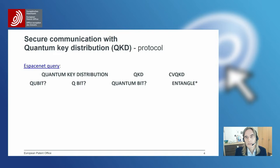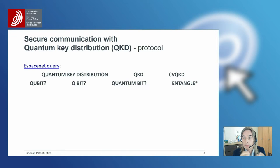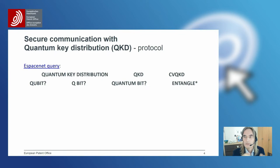I will show you how to actually implement some of the queries in Espacenet. First, let's understand what this technology is about — it's about secure communication using encryption keys. Quantum mechanics allows you to exchange those encryption keys in a secure way, making sure that nobody can listen to you. Because if somebody listens to your signals, it will change the entangled photons exchanged between the receiver and the sender, and you will realize that. This way, if somebody listened to you, you will know and will not use that key, and you will do another key exchange.